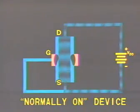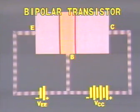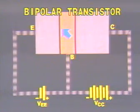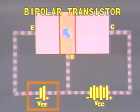This characteristic is the opposite of bipolar transistors where the base emitter junction must be forward biased for collector current to flow.